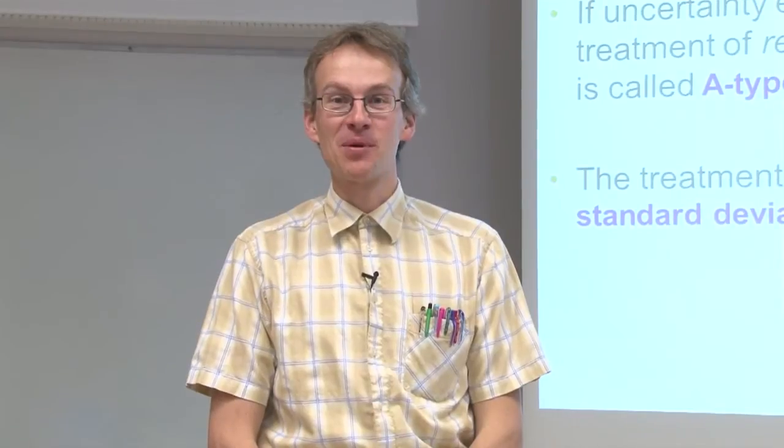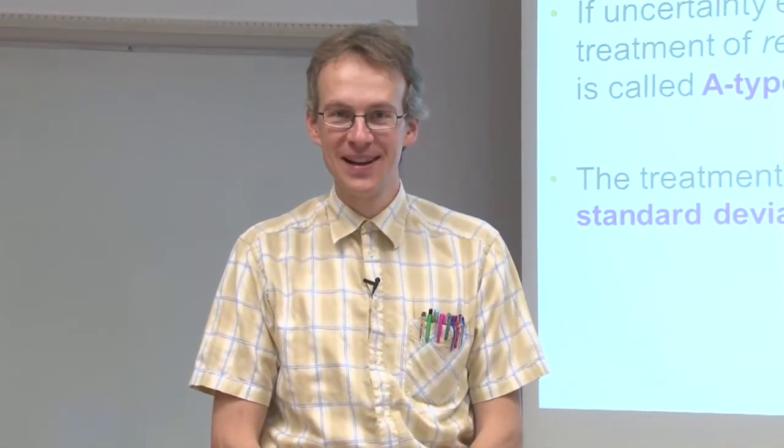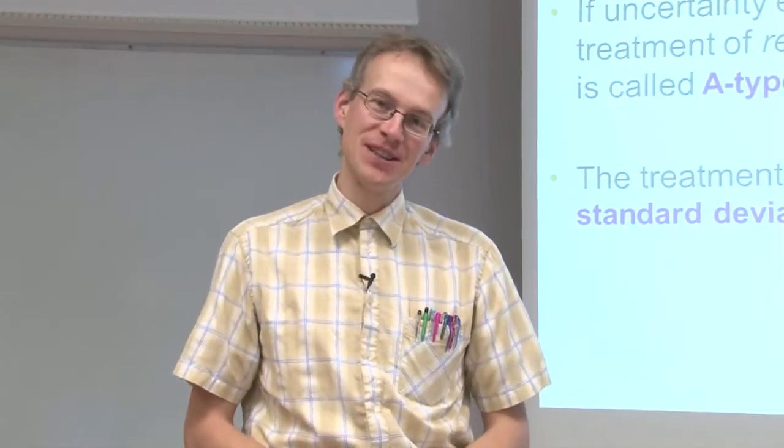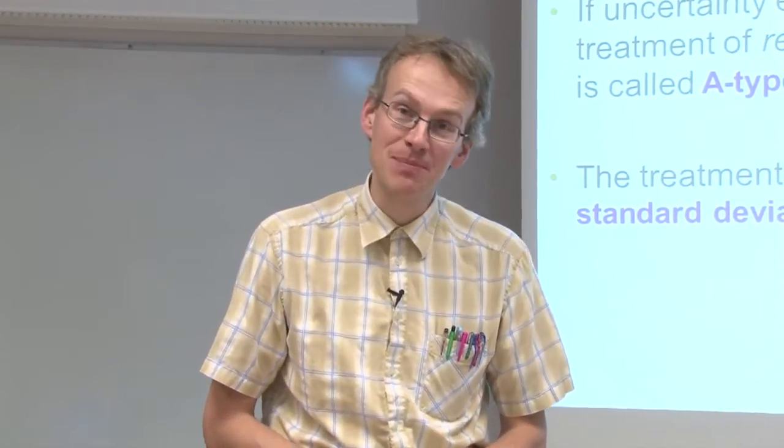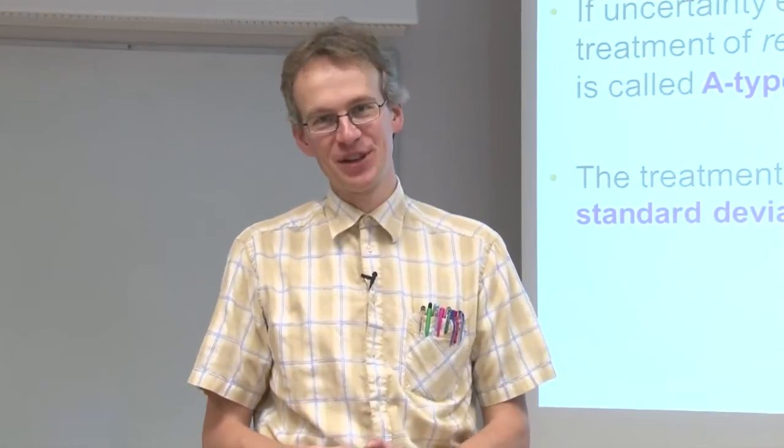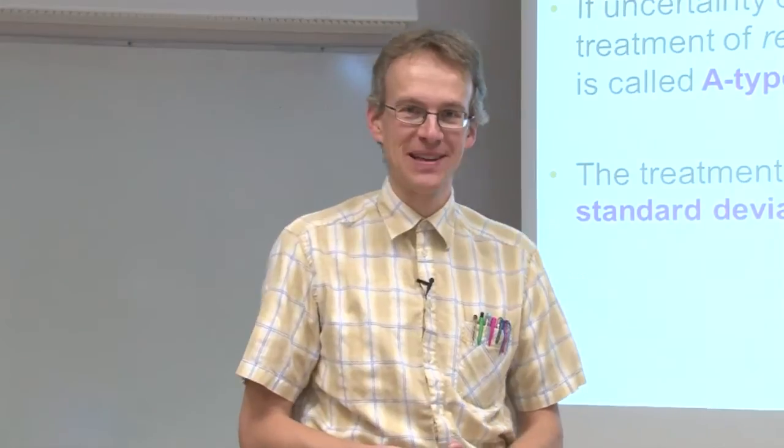In very broad terms, there are two ways of estimating measurement uncertainty components: the A-type and the B-type uncertainty estimation. Let us see what these terms mean.